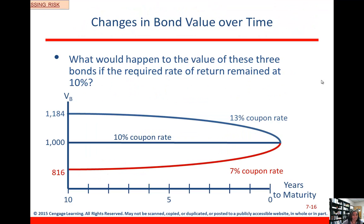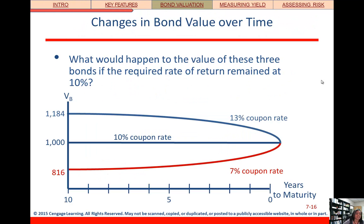You should be trying these out to make sure you're getting the same results. What's happening over time is that the premium bond is going to decrease in value, the discount bond is going to increase in value, and the par bond is going to stay the same, so that at maturity they're all going to be worth $1,000, which is the face value.